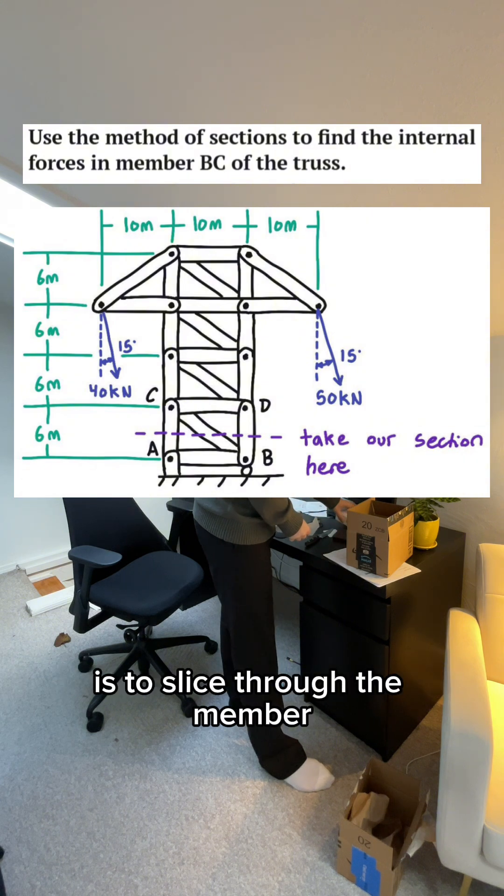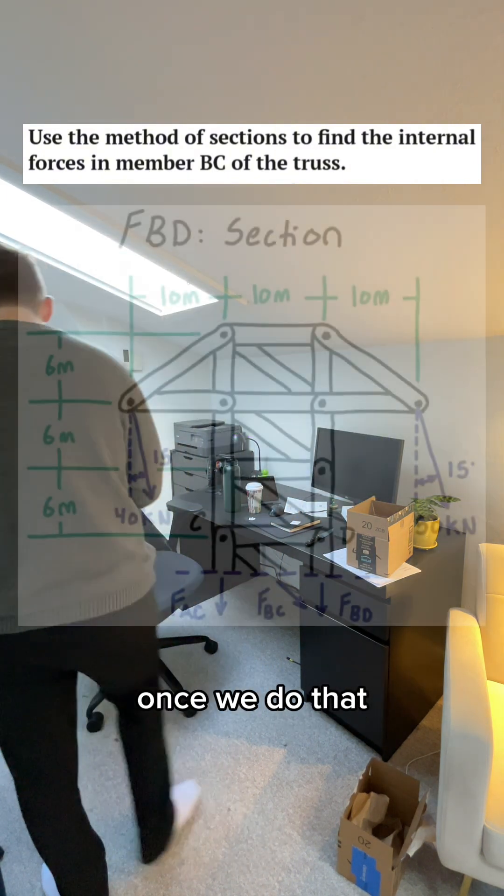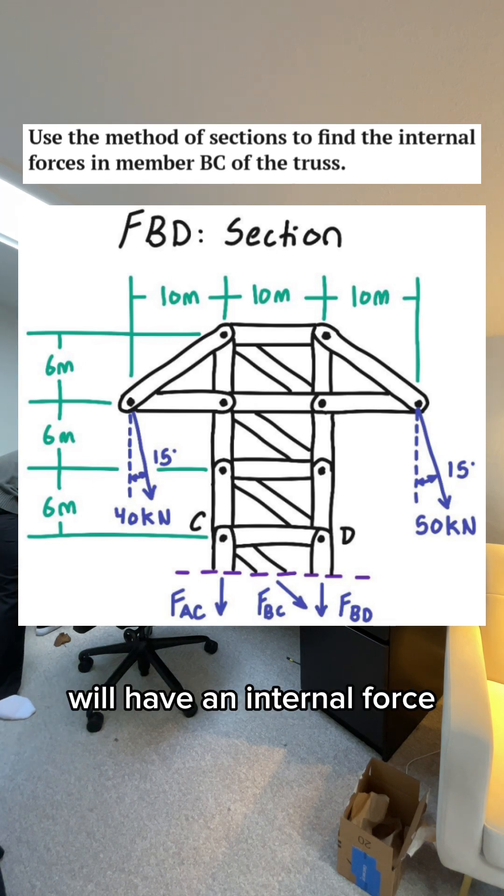The trick with the method of sections is to slice through the member that we want to find the internal force of. Once we do that, each member we slice through will have an internal force.